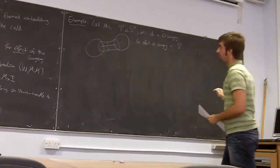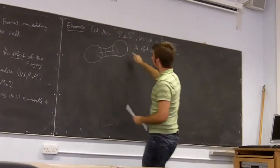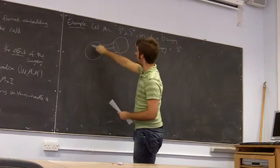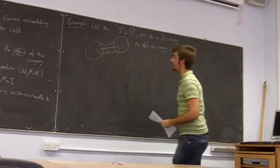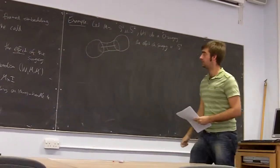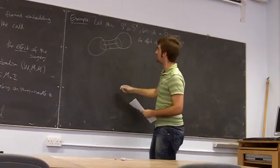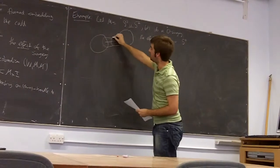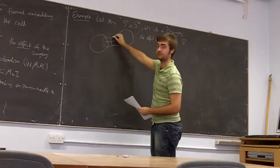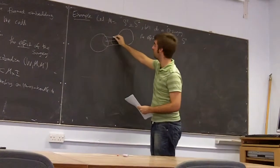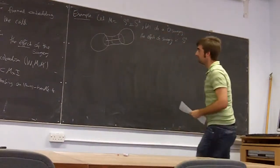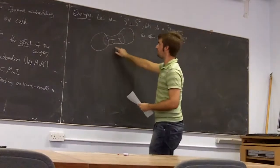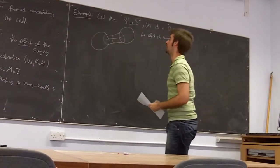Conversely, if we now look at this picture and just look at this S2 that goes around the outside, what we could have done is: inside the S2, we've attached — now the belt sphere is the attaching sphere. This is now a two-handle.